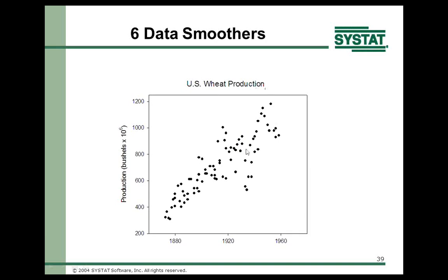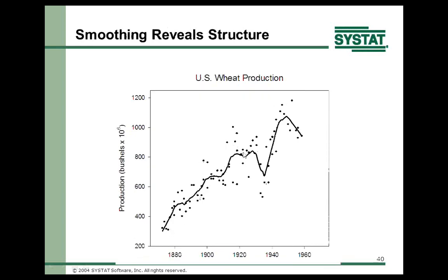There are six built-in data smoothers. Here's wheat production data from the U.S. starting before 1880 up to about 1960 — you can't easily tell the trend because of scatter. But if you put a smooth line through it, you see a gradual increase with dips around 1938 and again in the early 1950s. Looking at where those dips are: 1938 corresponds to pre-World War II, and 1950-60 corresponds to the Korean War. A smooth line through scattered data can reveal these kinds of patterns.